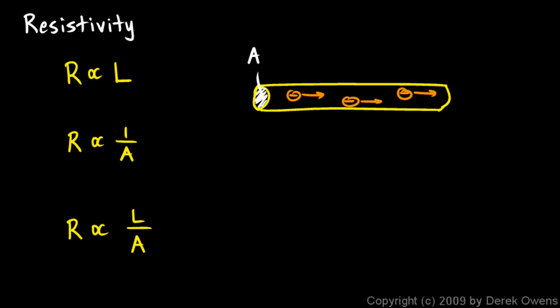We can say the resistance is equal to some constant times L over A. If you write constant L over A, that means there's some multiplier, the constant of proportionality.